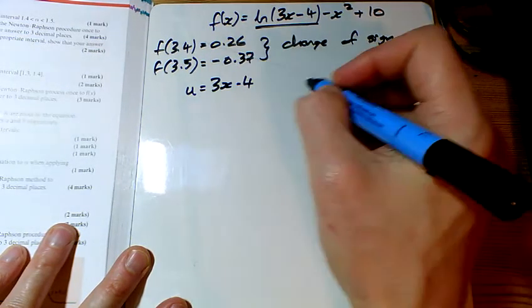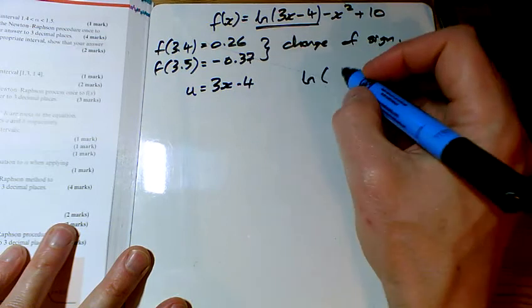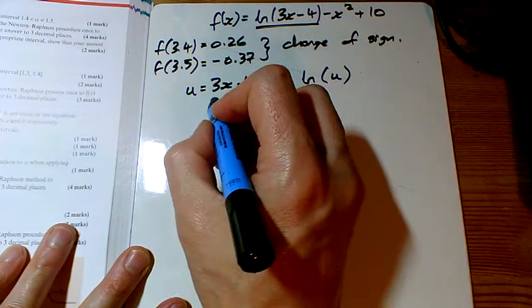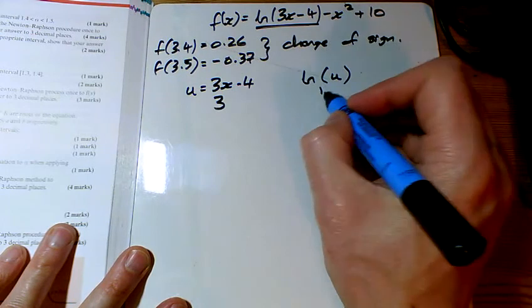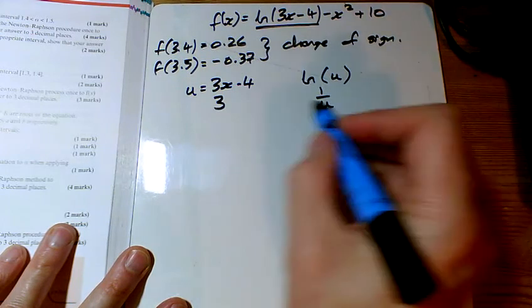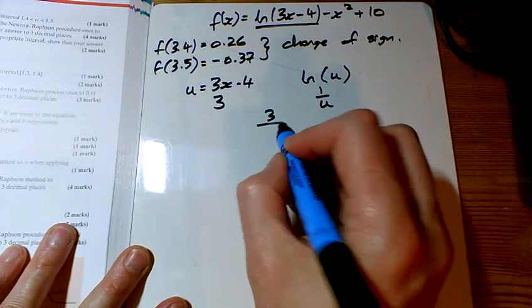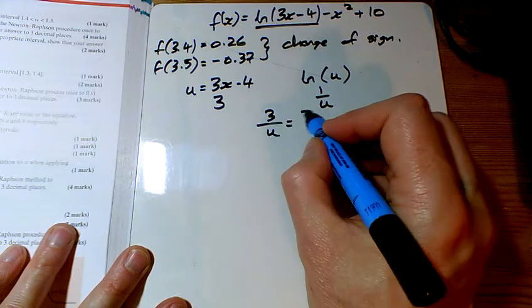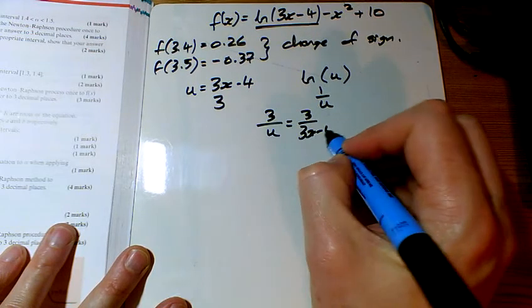We've got u equals this. We're trying to differentiate the ln of u. This differentiates to 3. This differentiates to 1 over u, times them together. So we've got 3 over u, which is 3 over 3x minus 4.